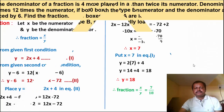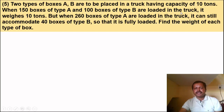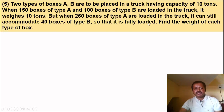Example 5: Two types of boxes A and B are to be placed in a truck having capacity of 10 tons. When 150 boxes of type A and 100 boxes of type B are loaded, the truck weighs 10 tons. When 260 boxes of type A are loaded, it can still accommodate 40 boxes of type B to be fully loaded. Find the weight of each type of box.